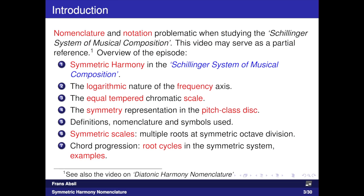Hello, this is another video episode about the nomenclature and the notation in the Schillinger system of musical composition. The focus in this video is on symmetric harmony, and there is a companion episode about diatonic harmony. Terminology and symbols used turn out to be a stumbling block when reading the Schillinger system. In this video I will try to explain the notation and provide an alternative.